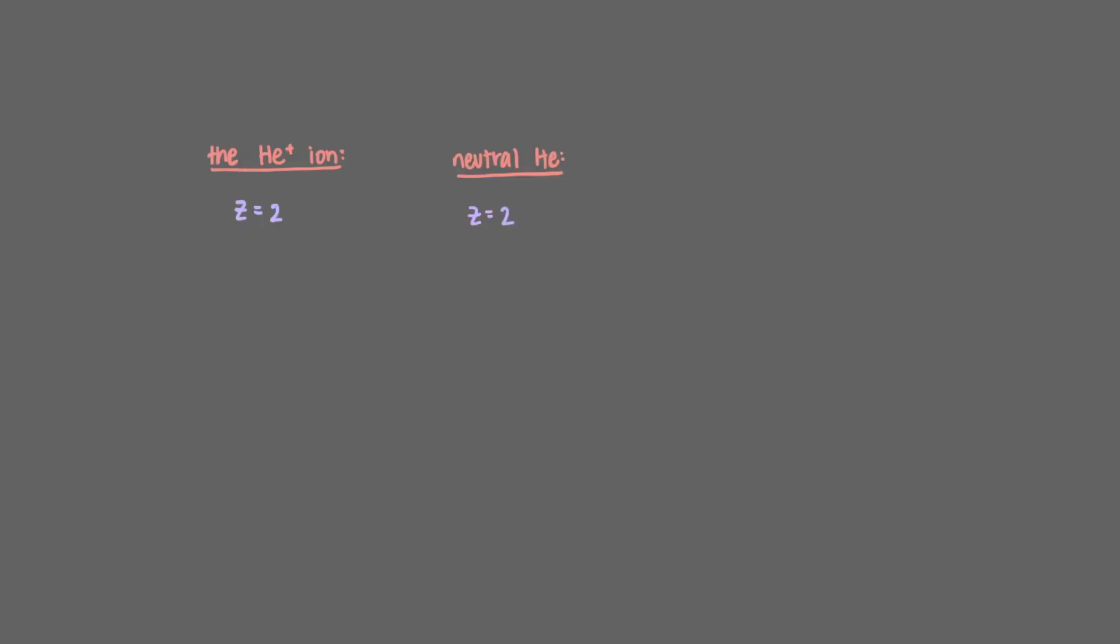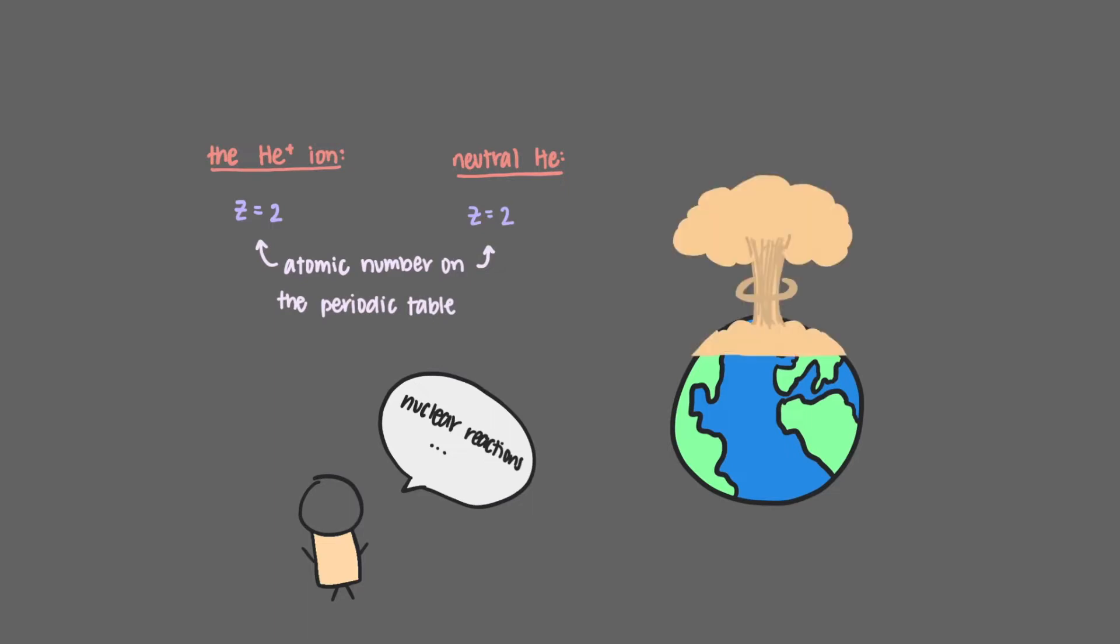The helium atom has two protons in its nucleus. It's the same value as the atomic number, which can be found on the periodic table. It cannot lose or gain protons because then it wouldn't be helium anymore. Also, nuclear reactions like that are not for the faint of heart.